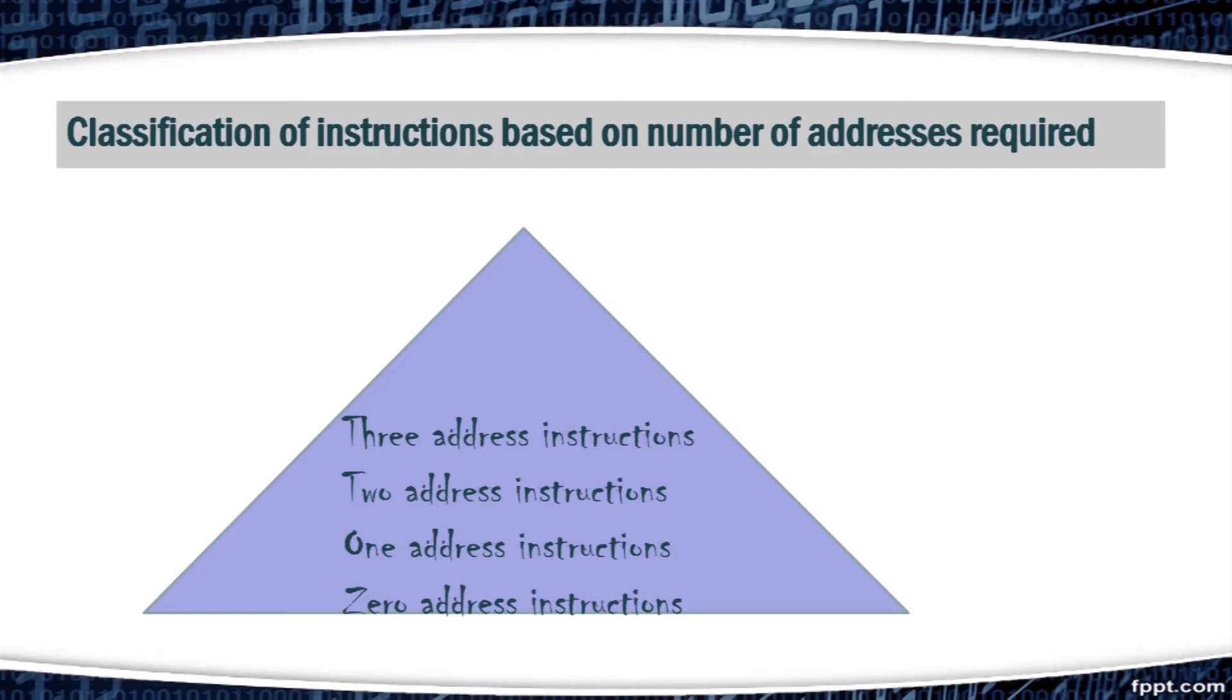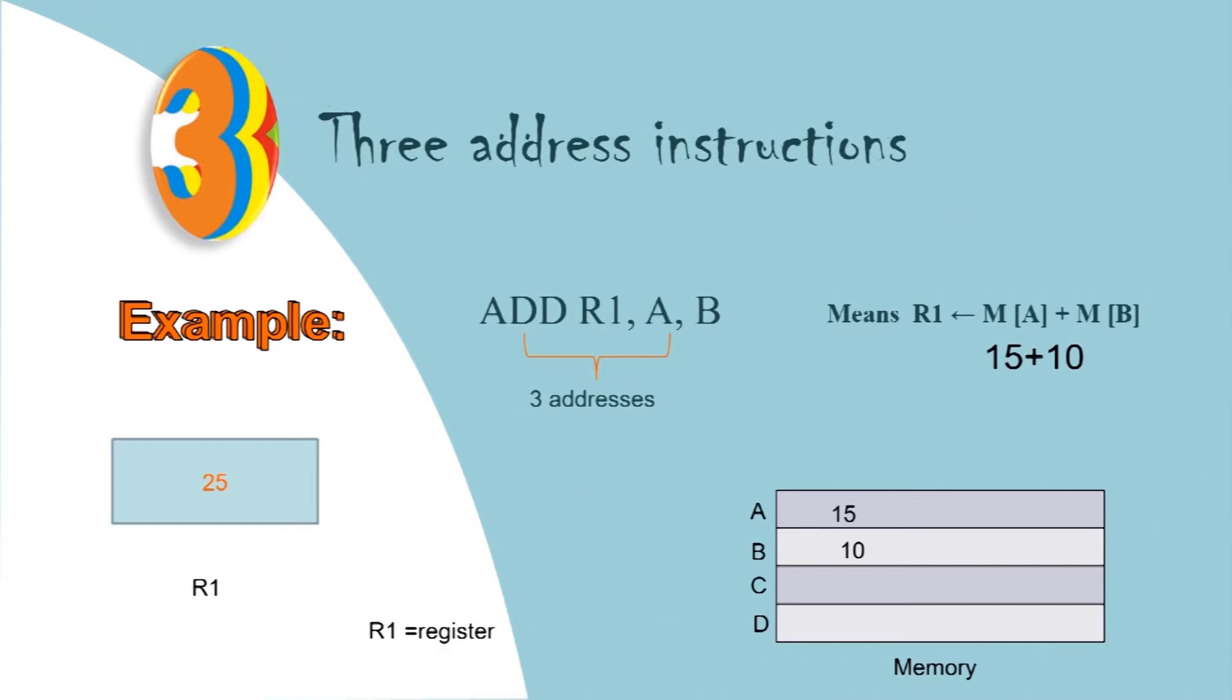First, let's discuss three address instructions. Three address instruction formats can use three address fields that specify either a processor register or a memory operand. That have value 10 and MB have value 15. So, after calculation 25 is stored into register R1.